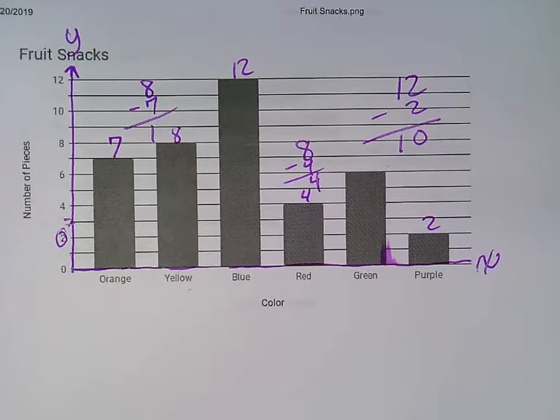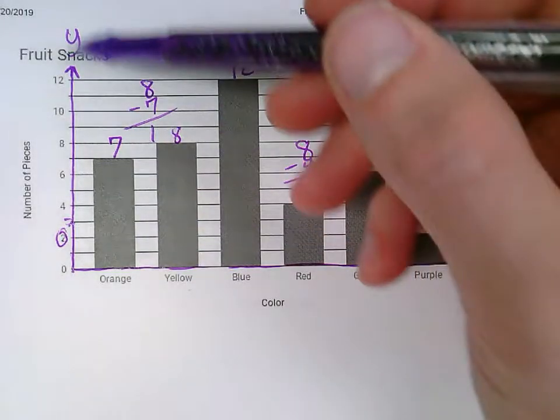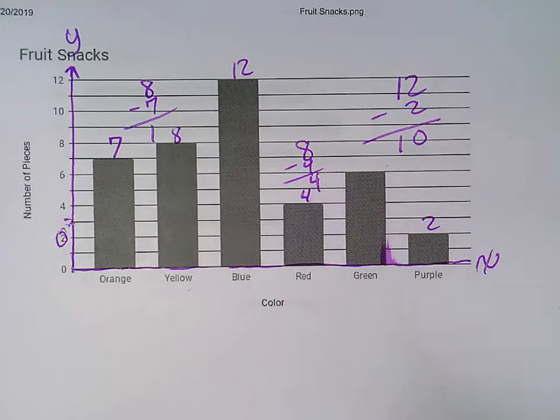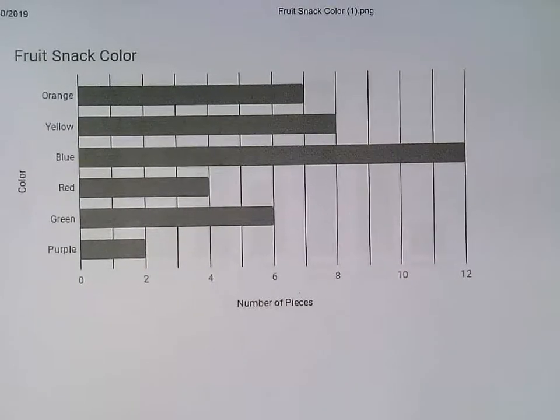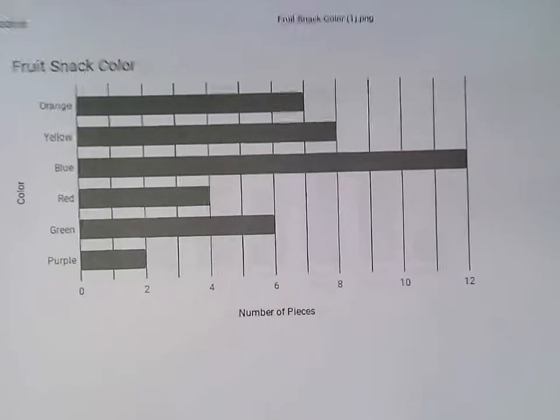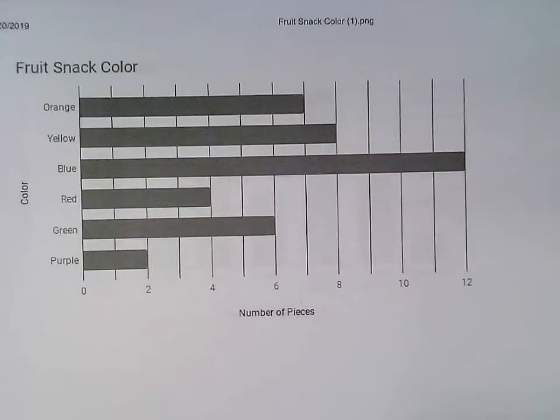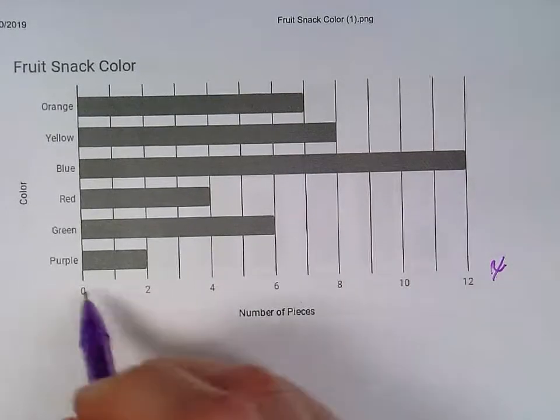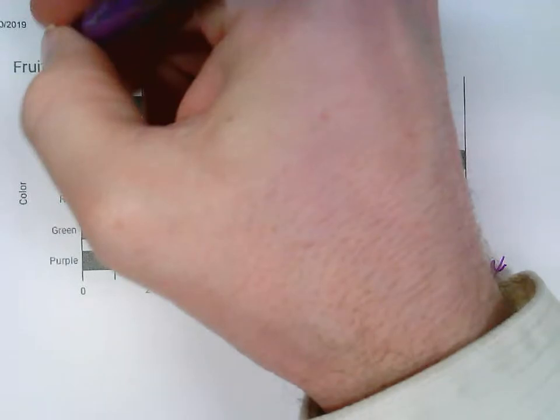Now, as I said, the y-axis doesn't always have the numbers. It's just usually, most often. This next graph is actually the same exact graph, but it's just switched from the x-axis and the y-axis. So on this one, my x-axis, which is the horizontal one, contains the numbers. On this one, the y-axis contains the words.